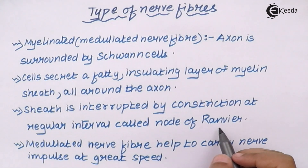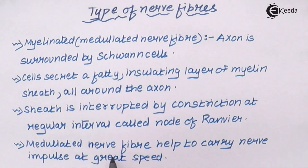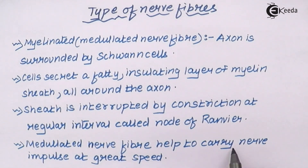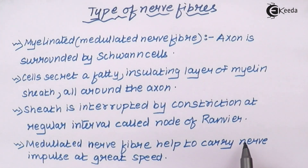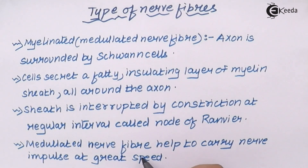This sheath is interrupted by constrictions or narrowings at regular intervals, which are termed Nodes of Ranvier. The Node of Ranvier is related to the Schwann cells. Medullated nerve fibers also help carry nerve impulses — or electric impulses for information processing — at a much greater speed compared to the non-myelinated ones.